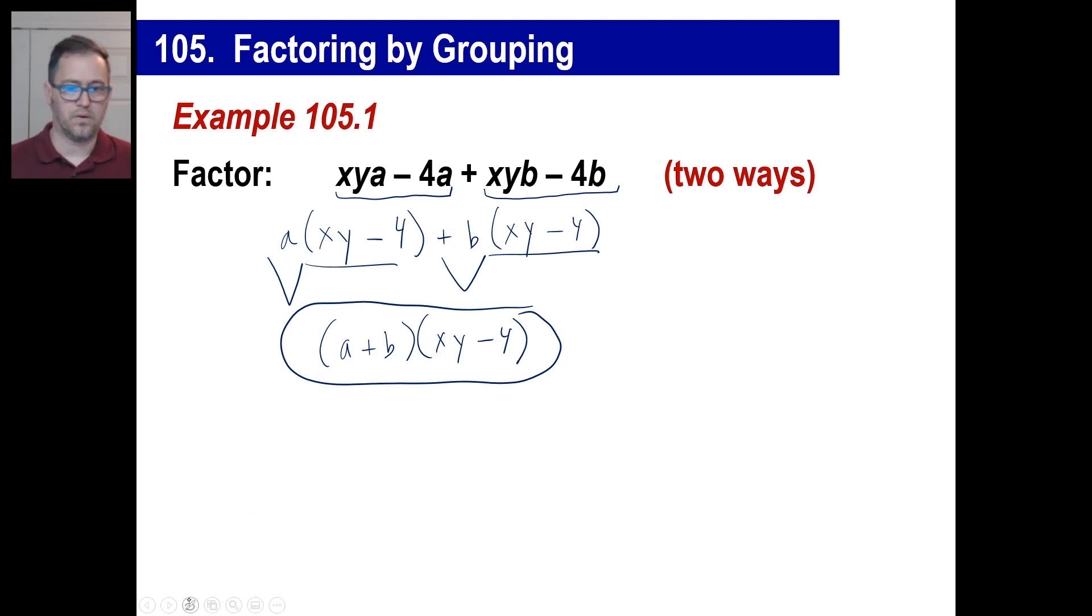Now, you might have said, oh, I'm gonna try a different way. Oh, look, I noticed that here's an xy here, and oh, and there's an xy there. I'm gonna put those together. Fine, go ahead and do it. All right, well, we can actually, let's just rewrite them. Xya plus xyb minus four a minus four b. That's fine, doesn't matter what order they're in. So we can go over here, we can go, okay, what's the common factor of xya and xyb? Well, xy. We can pull that out of there. And we can go, we have a plus b left.